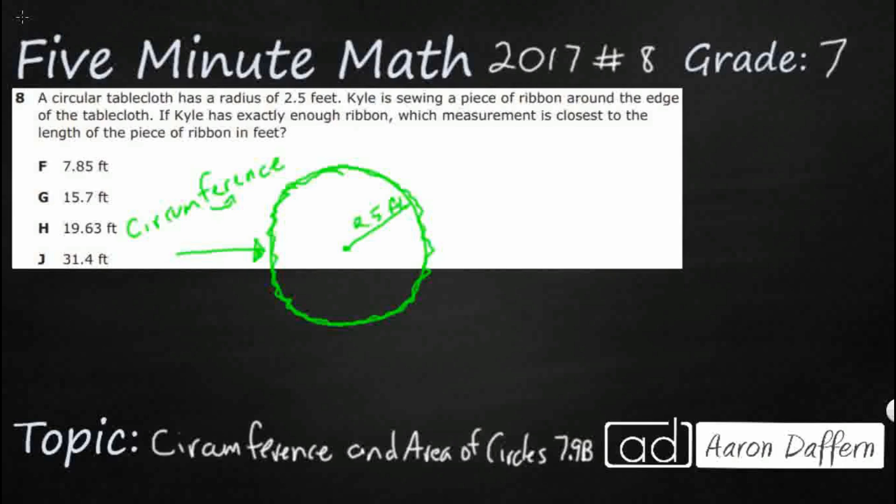How I always remember circumference is I imagine kind of moving that F down a little bit and just making the word fence. A fence goes around the outside of a yard and circumference goes around the outside of a circle. Now that we're looking for circumference, we can look at our formula chart. We see that circumference is simply the multiplication of pi and your diameter.